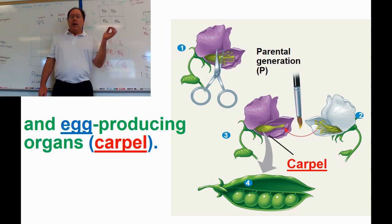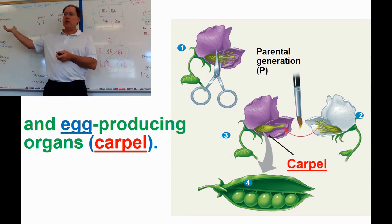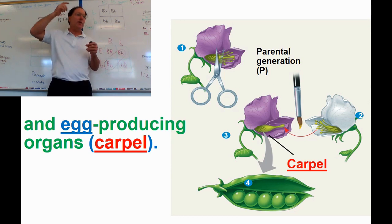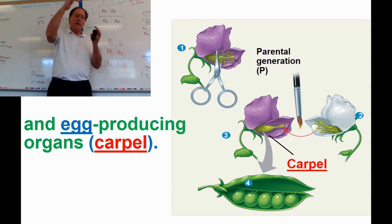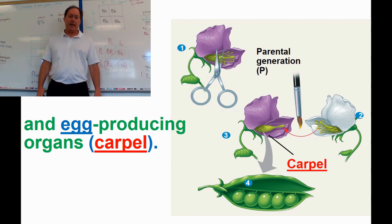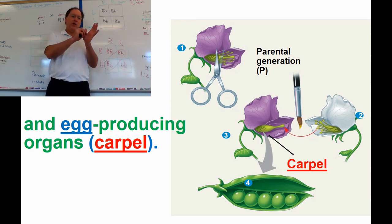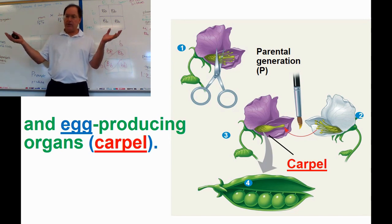Flowering plants also have something called a carpel — an egg-producing region. In non-self-fertilizing plants, pollinators like bees take pollen from the stamen, fly to the next flower, and inadvertently brush up against the carpel. The pollen — which is like the sperm — gets on the carpel and fertilizes the egg, eventually forming the seed pod. What Mendel did was take control of this process: he cut off the stamens and used a paintbrush to artificially transfer pollen from flowers he chose to the carpel of other flowers he wanted to pollinate.